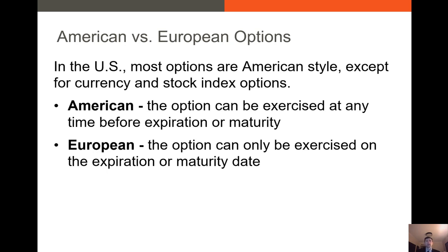So what is the difference between an American and a European option? American options are options where you can exercise that option anytime on or before maturity. This is the case for most stock options, where you can exercise up to the maturity or expiration date. European options are a certain type of option where you can only exercise on the expiration date — you cannot exercise before that expiration date.